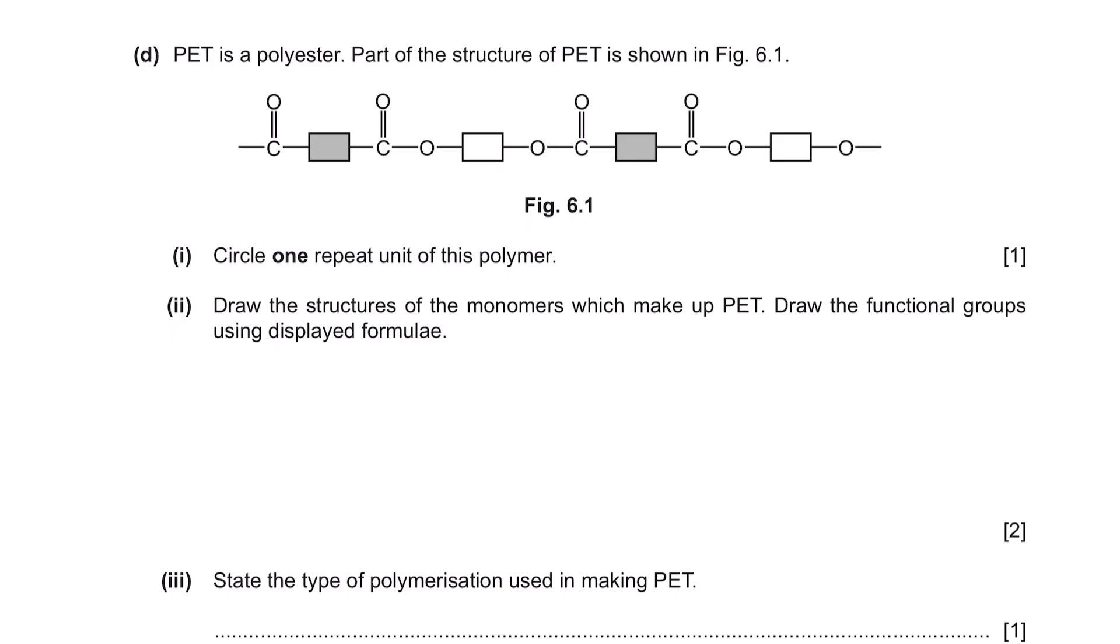Question D: PET is a polyester. Part of the structure of PET is shown in figure 6.1. Part 1: Circle 1 repeat unit of this polymer. So you can notice the repeated pattern for this, and you can circle either one of this. Part 2: Draw the structure of the monomers which make up PET. Draw the functional groups using displayed formula. So we have here one repeat unit of this formula and you can see that it contains two different functional groups of carboxylic acid and alcohol. So now we have to draw the structure of these monomers individually with their functional group displayed. The functional group of carboxylic acid is COOH and the functional group for alcohol is OH.